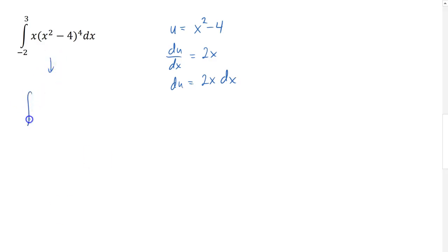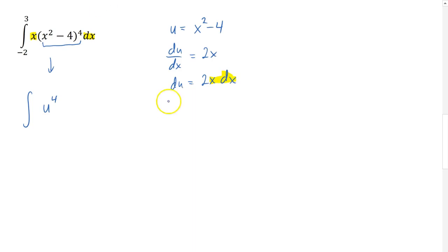I'll rewrite my integral. The complicated part of the integrand becomes u to the fourth power. I also have x dx in my integrand, which appears in my du expression. Similar to the second example, I can replace x dx with half du, because multiplying both sides of du = 2x dx by one-half gives exactly x dx. So I replace x dx with half du.